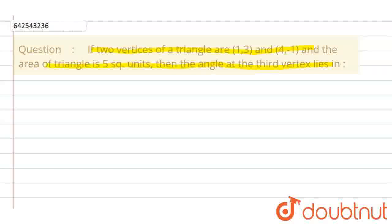First of all, to solve this question, we will make our triangle. Let's suppose this is our triangle A, B, C, and we have given B coordinate as (1, 3) and C coordinate as (4, -1). Now, we have to find the value of angle A.